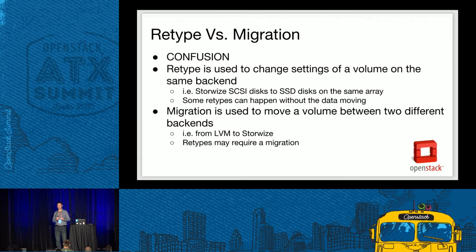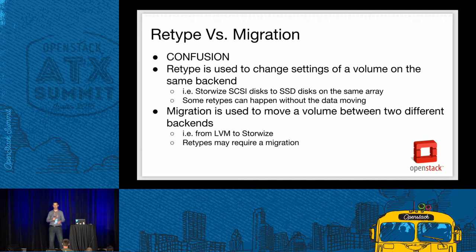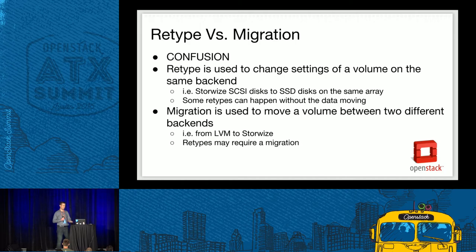One caveat worth noting: if you want to add an extra spec that wasn't initially there to set a value on a volume, you can't just edit the volume type and change the extra spec — there are no hooks to update all your existing volumes and there are a lot of caveats with doing that. The recommended practice is to create a new volume type, set that extra spec in the new type, and then do a retype to change your volumes over. If it's just changing a setting on the array, it's typically a very quick operation with no data migration or movement.